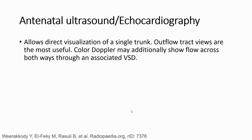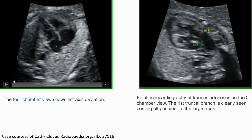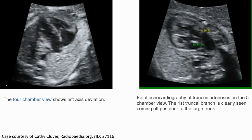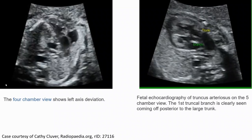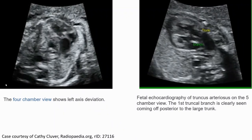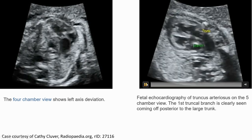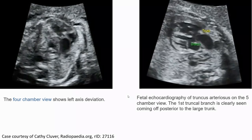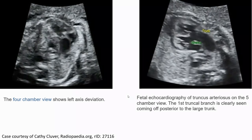In antenatal ultrasound or echocardiography, there is direct visualisation of a single common trunk — the truncus arteriosus. Color Doppler may additionally show flow across both great vessels through the common trunk. On the four-chamber view, left axis deviation may be seen. On the right video, there is echocardiography of truncus arteriosus on the five-chamber view, and the first branch is clearly seen coming out from the common trunk.